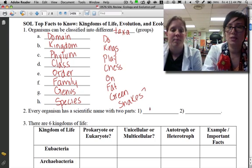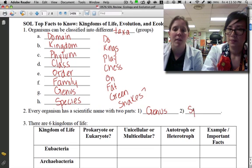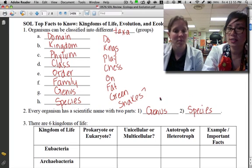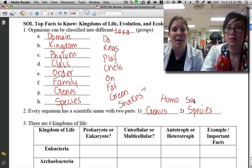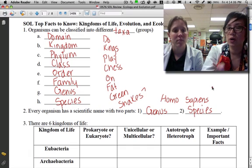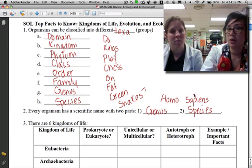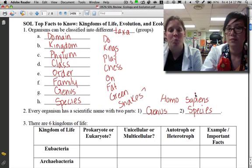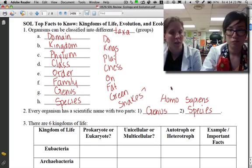Number two: Every organism has a scientific name with two parts, and those two parts are the genus followed by the species. Let's give an example. What is our scientific name? The genus is Homo and the species is sapien. The only organisms on the planet that have sapien as a species would be humans, but we're not the only organisms with the genus Homo. There are others like Homo habilis and Homo erectus, ancient humans. If the genus is in common, it says that we're pretty similar to one another.